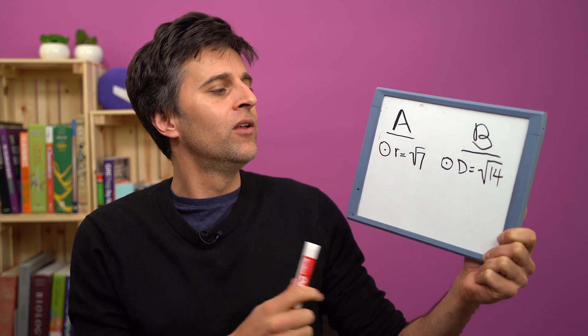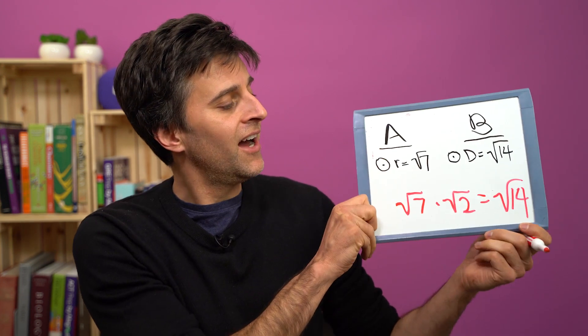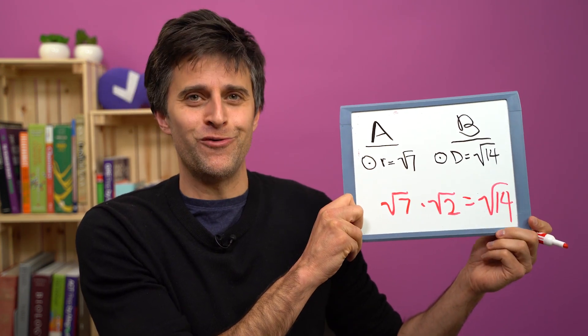What's going on here? Well, root 7 and root 14, what is the connection there? I'm going to show you. Root 7 times root 2 equals root 14.